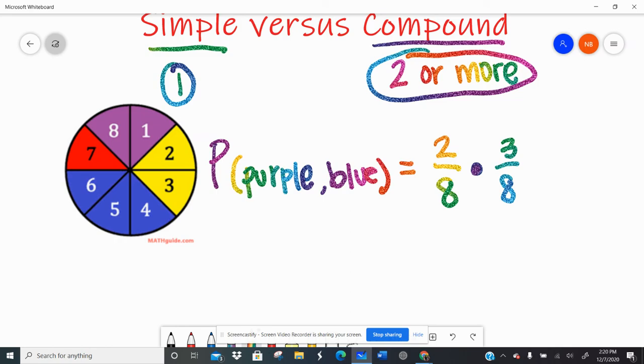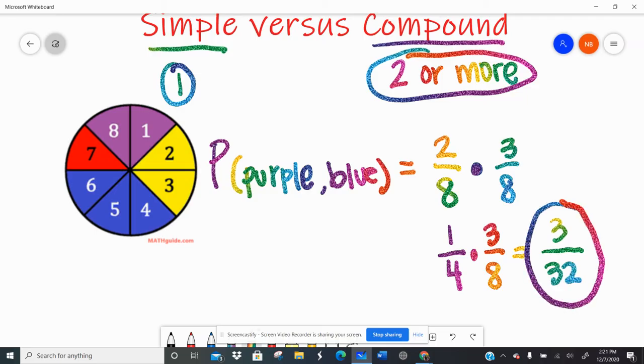Now think back to multiplying fractions. We want to make sure our fractions are in simplest form. So I'm going to reduce two eighths to one fourths before I do my multiplying so that I don't have to get all caught up in simplifying my answer. So top times the top. One times three is three. Four times eight is 32. So that is the answer. Three over 32 would be the probability that I land on purple then blue, which means if I spin 32 times, I should get that combination about three times. So that would be in theory, but we'll talk about that later also.